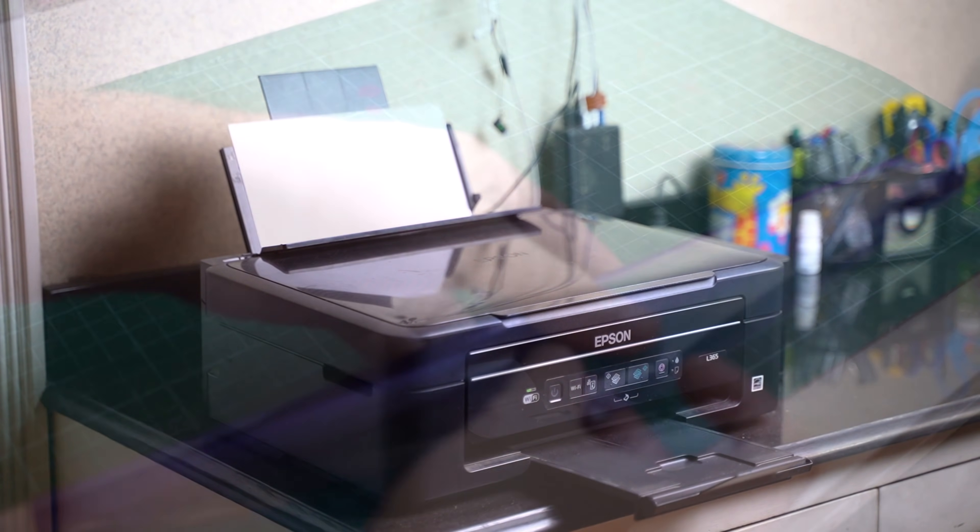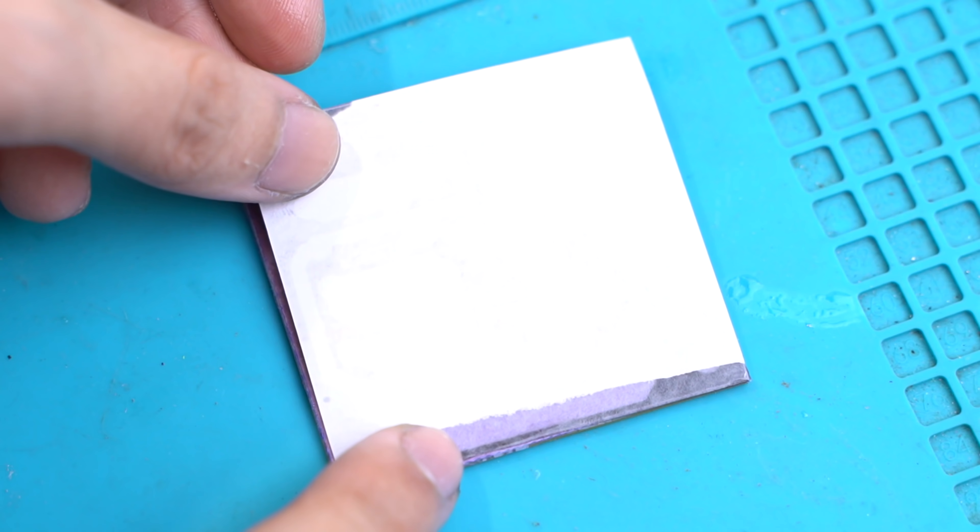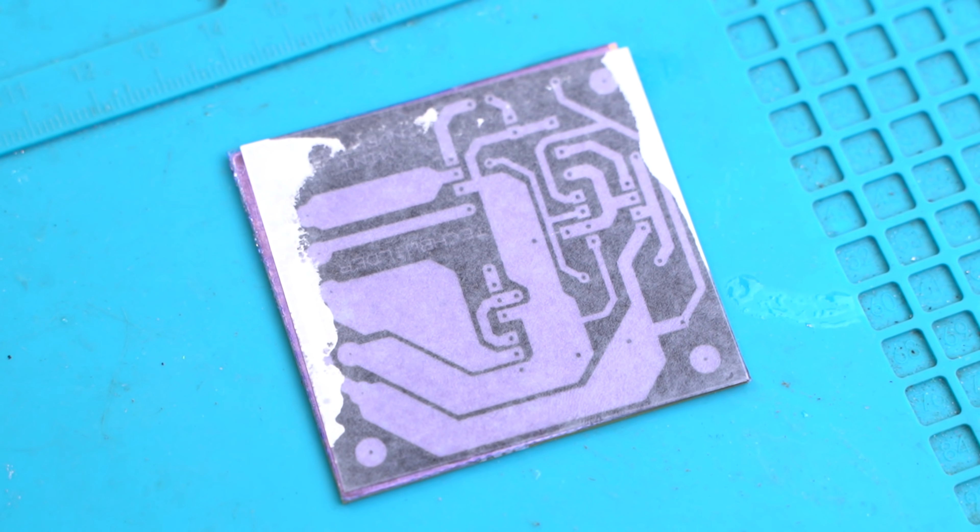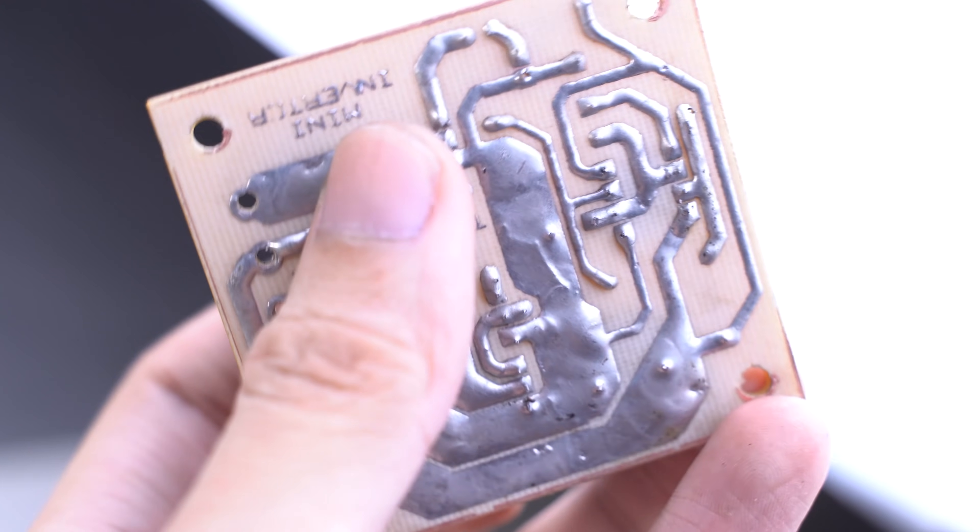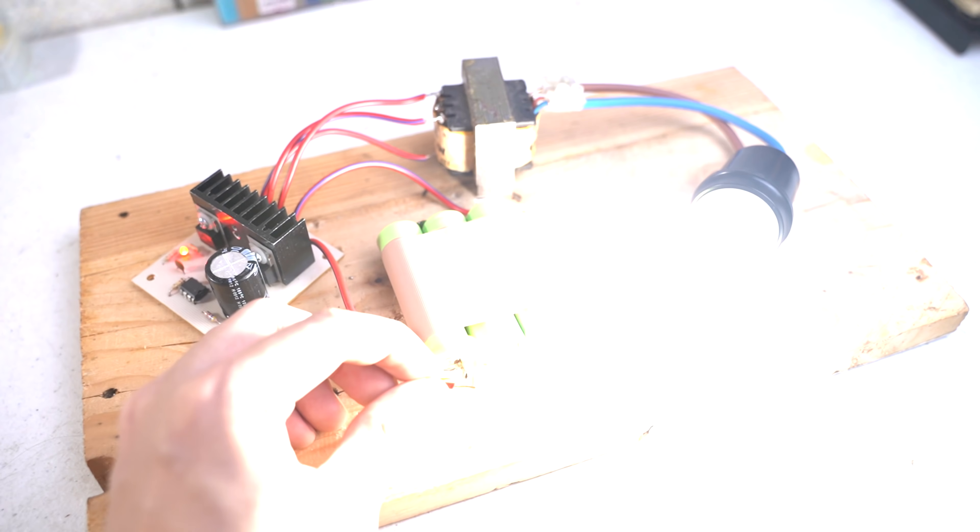Today, I'm going to show you another inkjet printer-friendly alternative for homebrew PCB fabrication. It's the dry film PCB method. It's cheaper than the presensitized PCBs and does not require an expensive laser printer used for the toner transfer method.